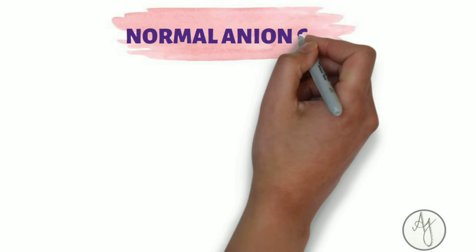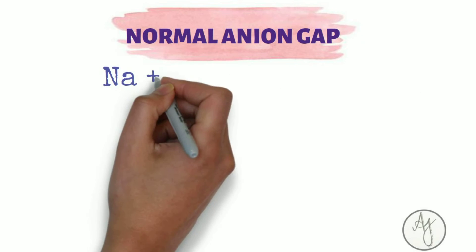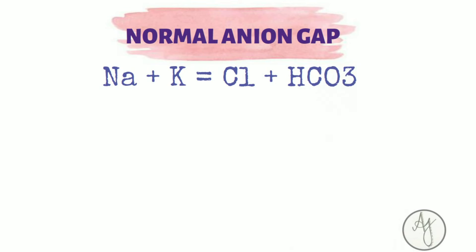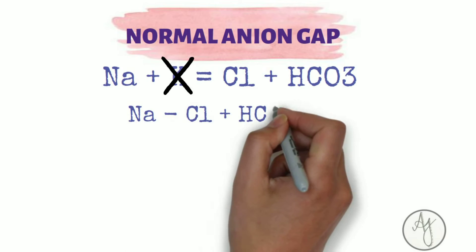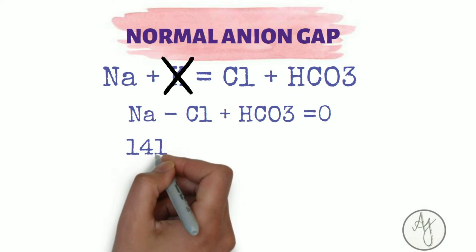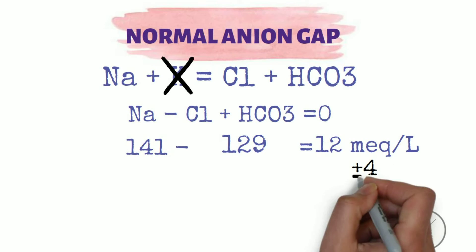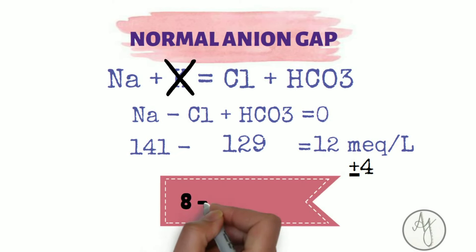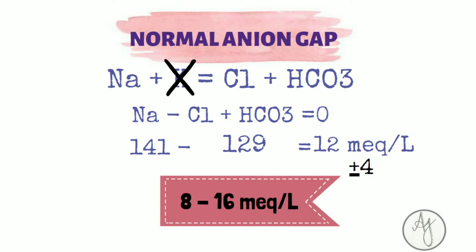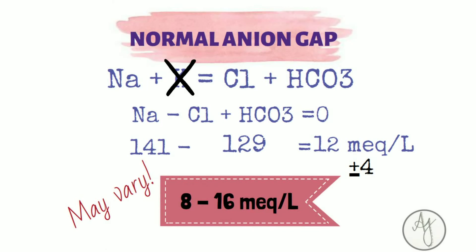The normal anion gap formula is: sodium plus potassium equals chloride plus bicarbonate. Most labs use only the sodium value since potassium is proportionately less in the serum, giving: sodium minus (chloride plus bicarb) equals zero. Putting in normal values gives 12 mEq/L, and with a range of plus or minus four, the normal serum anion gap is 8 to 16 mEq/L. This may vary by lab and whether potassium is included.